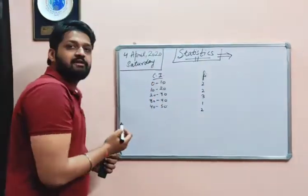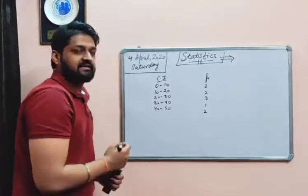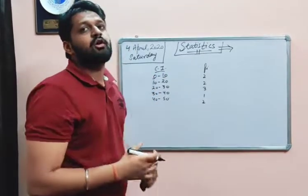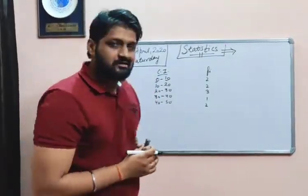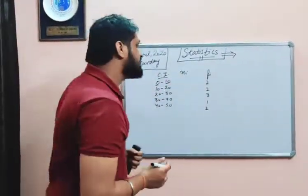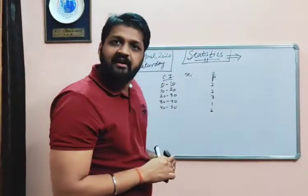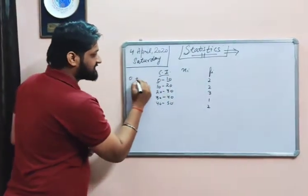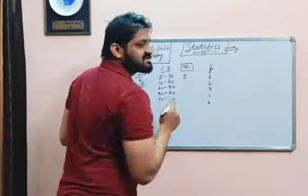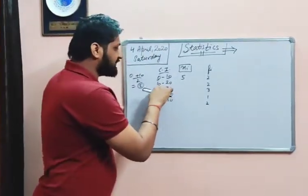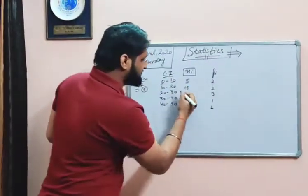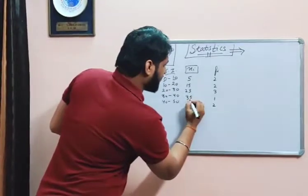So now, this is our class interval with intervals like 0–10, 10–20, and so on. The lower value is called the lower class limit and the upper value is called the upper class limit. There is a term called class mark, represented by xᵢ, and xᵢ = (lower limit + upper limit) / 2. For 0–10: (0 + 10) / 2 = 5. For 10–20: (10 + 20) / 2 = 15. Similarly, xᵢ values are 25, 35, and 45.